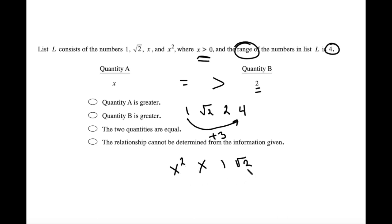Because square root of 2, being the largest number, would have to be 4 greater than the smallest number. That's a negative, which x squared cannot be. And so because of this, I know that quantity A has to be greater.